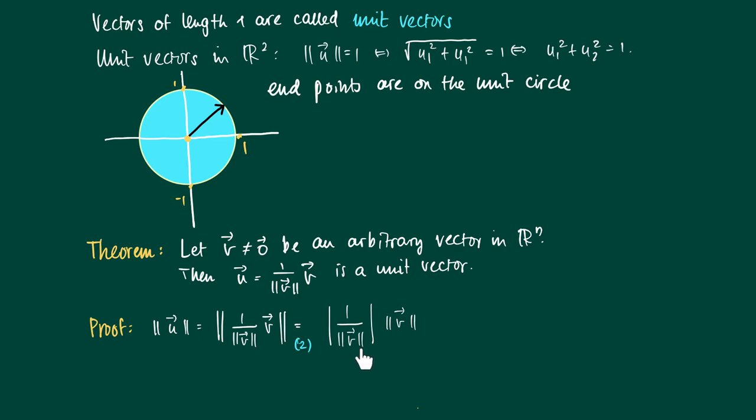So this equals 1 over the length of v (in absolute value) times the length of v. But we know that the norm of a vector is larger than 0 for non-zero vectors, so we may remove the absolute value sign. Actually we get 1 over the length of v times the length of v equals 1.